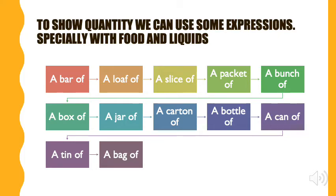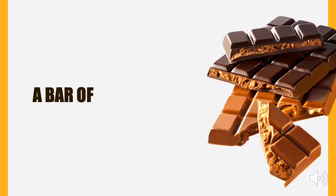So the first one is a bar of. We can say a bar of chocolate, for example, because chocolate is an uncountable noun. Therefore, we cannot say one chocolate, two chocolates. That doesn't exist. So to talk about quantity of chocolate, we're going to use a bar of. That is going to be the measurement.